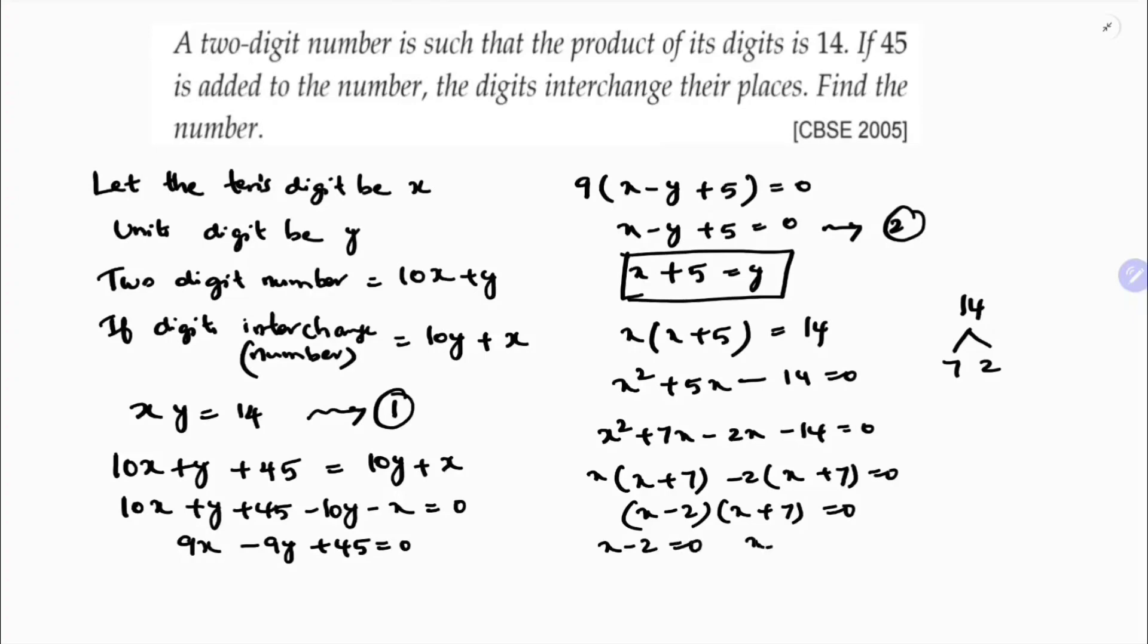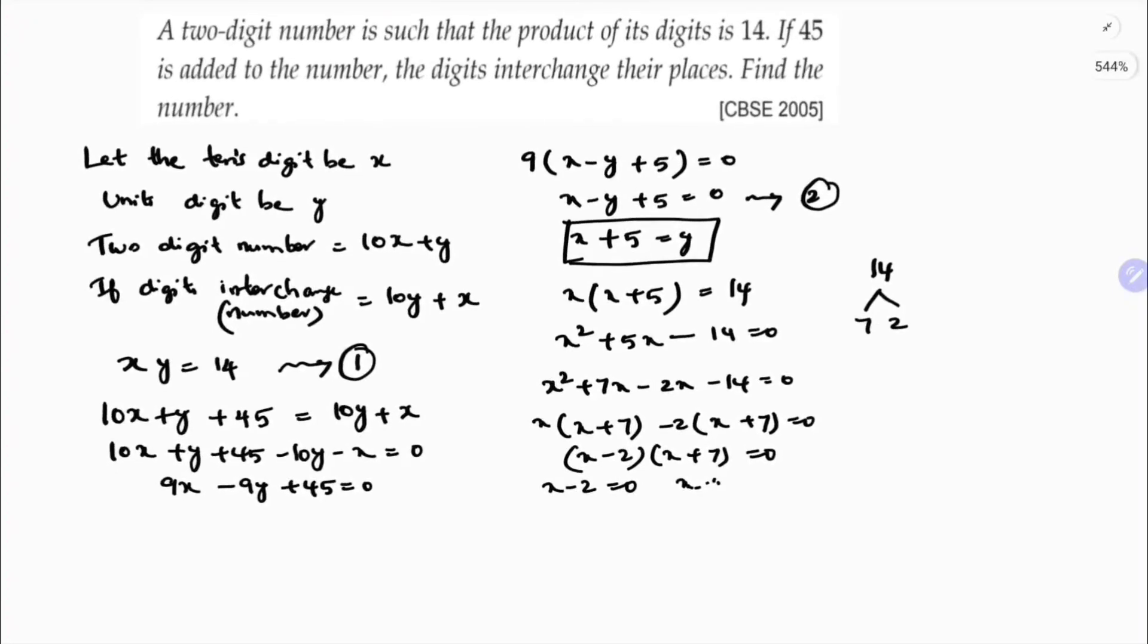x minus 2 into x plus 7 equals 0. x minus 2 equals 0, x plus 7 equals 0. x equals 2, x equals minus 7. Ignoring the negative value, so x equals 2. If x is 2, then y is x plus 5, 2 plus 5, y is 7.